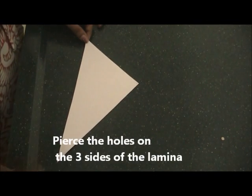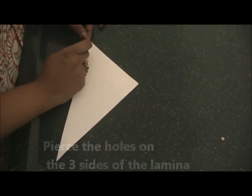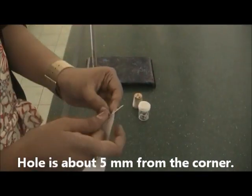This is the lamina. It has got three sides. When you pierce the hole, the hole has to be as close as possible to the edge, about 5mm away from the corner, like this.